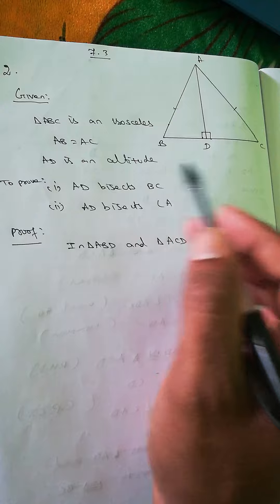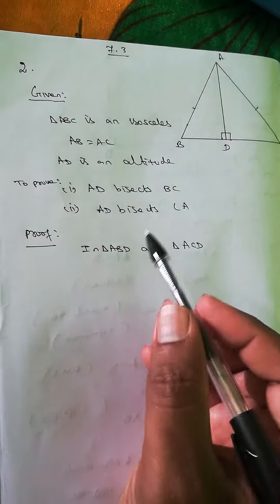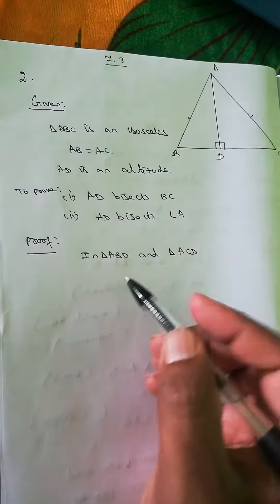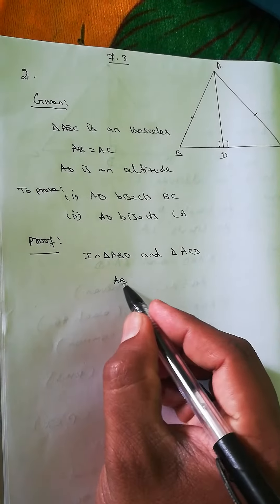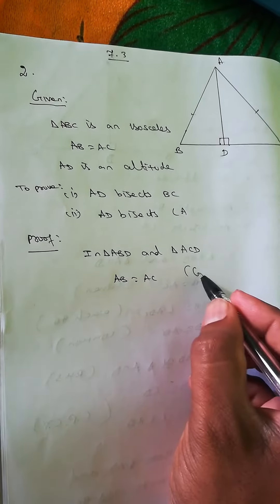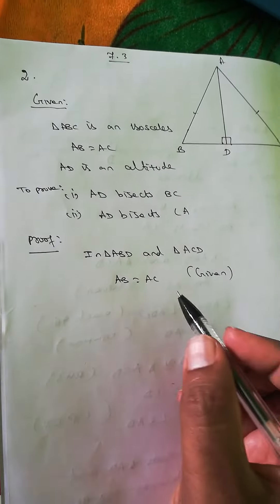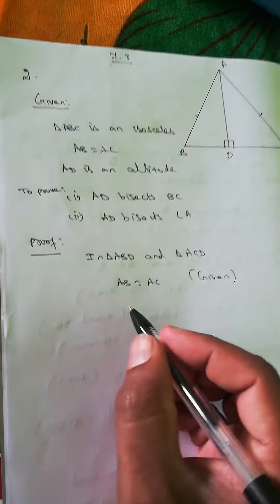AD bisects BC and AD bisects angle A. So we'll take two triangles: triangle ABD and triangle ACD. In these two triangles, we already know AB equals AC, that is given, and both have the side AD in common.